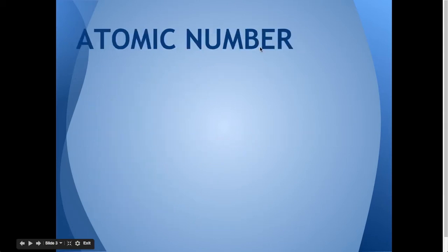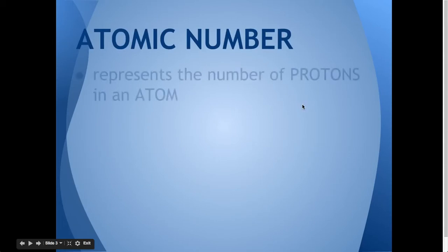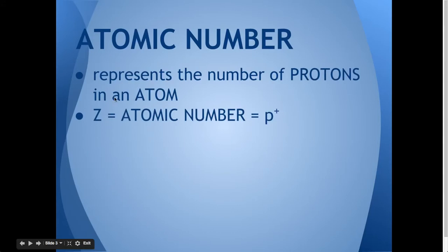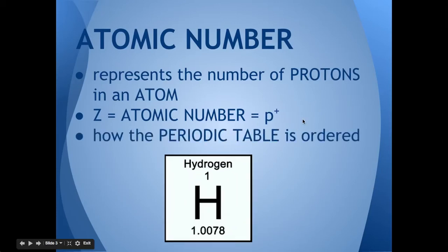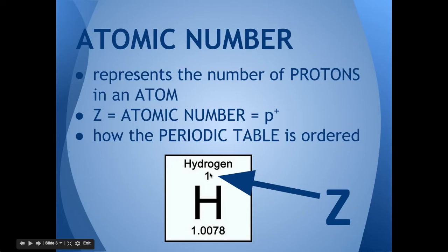The first one we're going to look at is the atomic number. Atomic number represents the number of protons in an atom, and its symbol is a capital Z. So capital Z equals the atomic number, and it's also equal to the number of protons. It's how the periodic table is ordered — you'll actually see it at the top of each element. In this case, hydrogen is 1, and the periodic table just goes up by 1 each time.